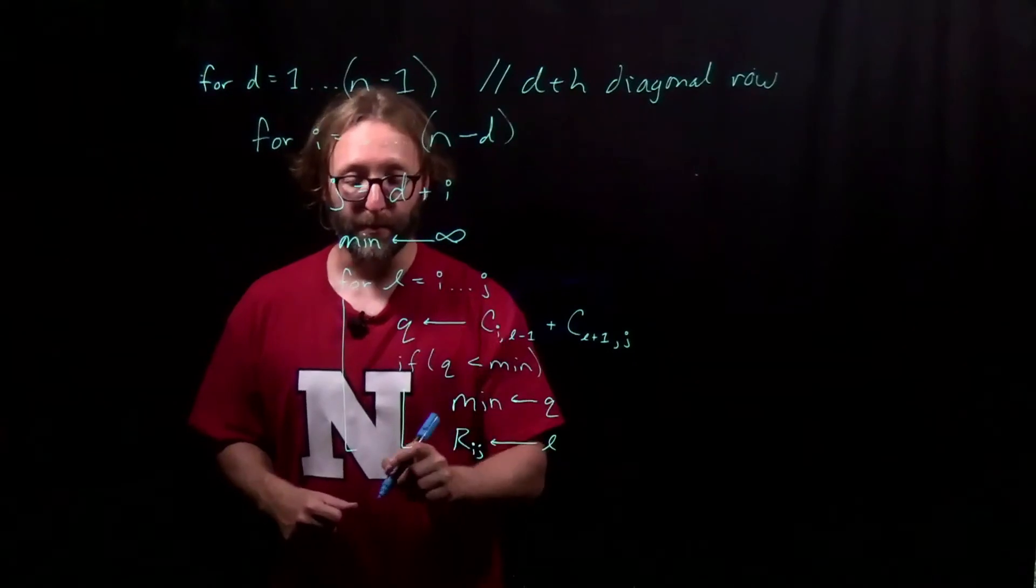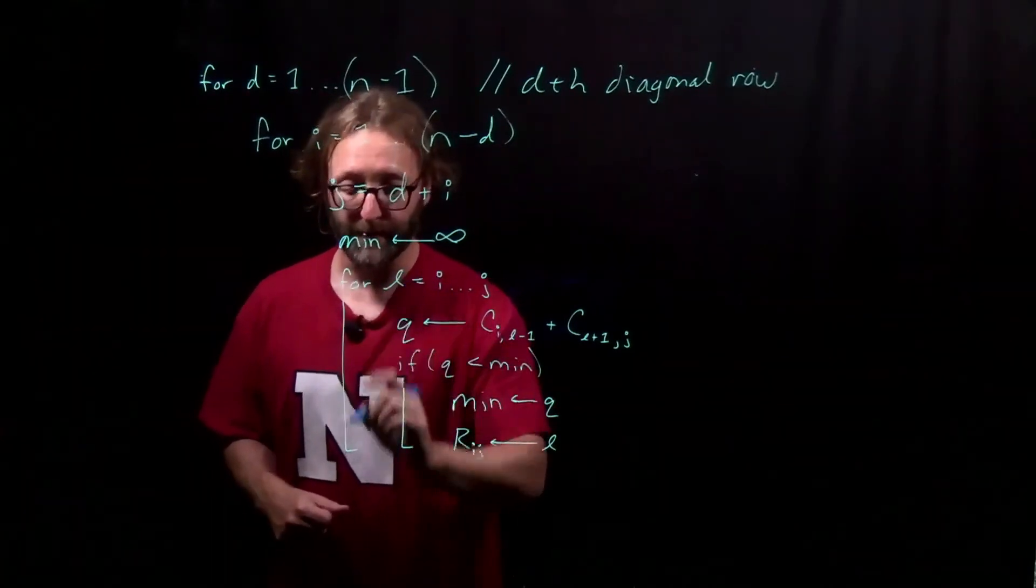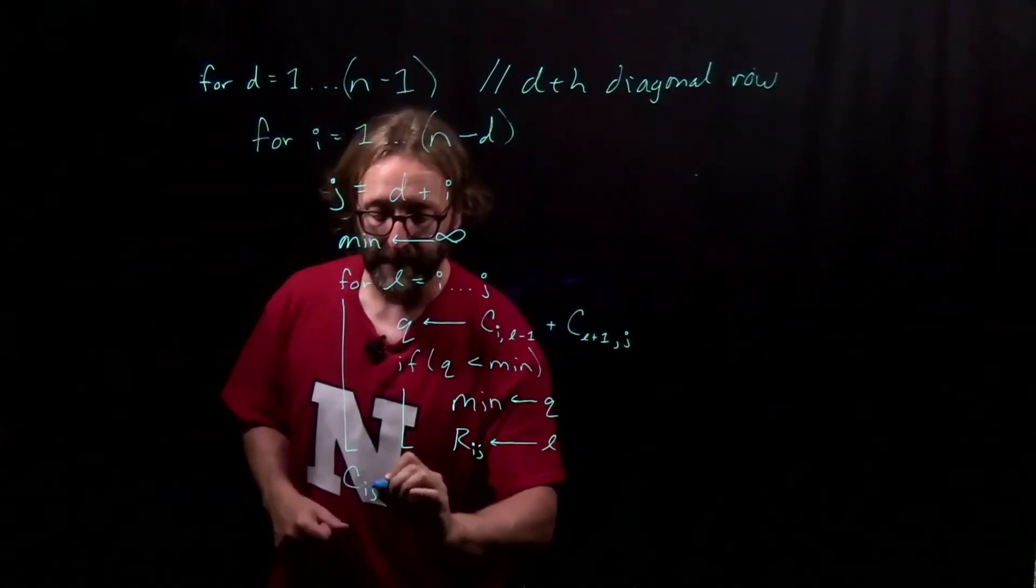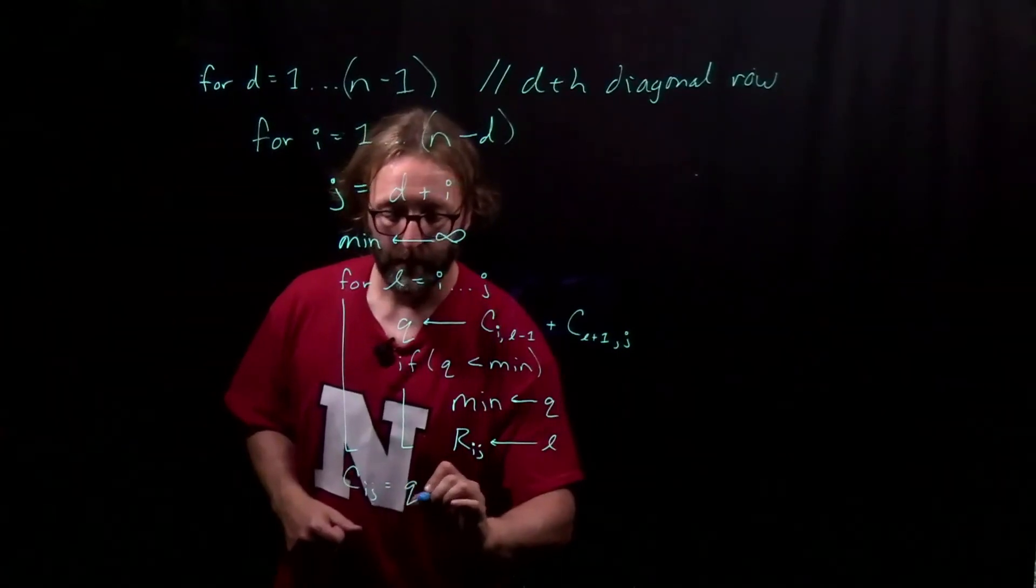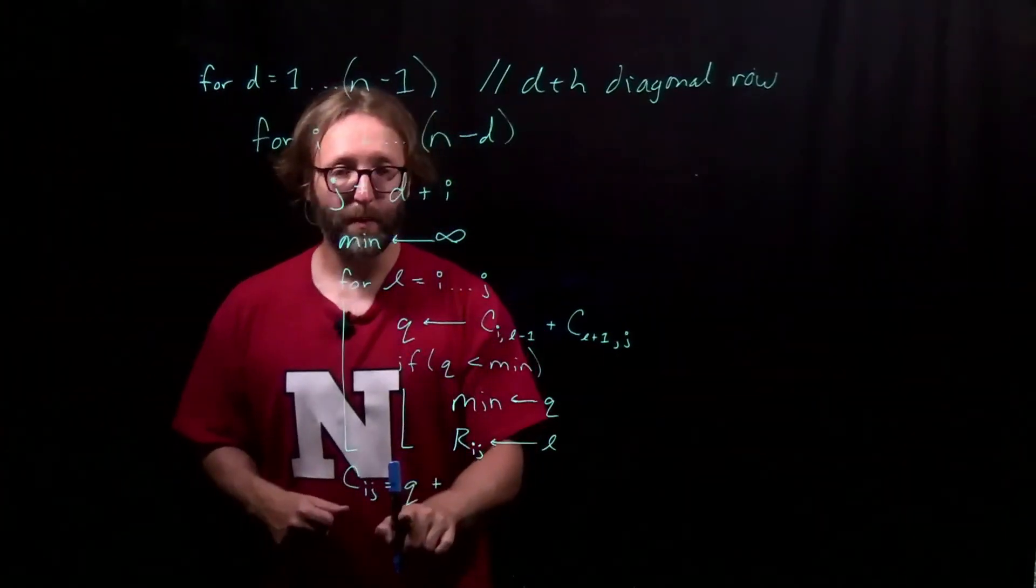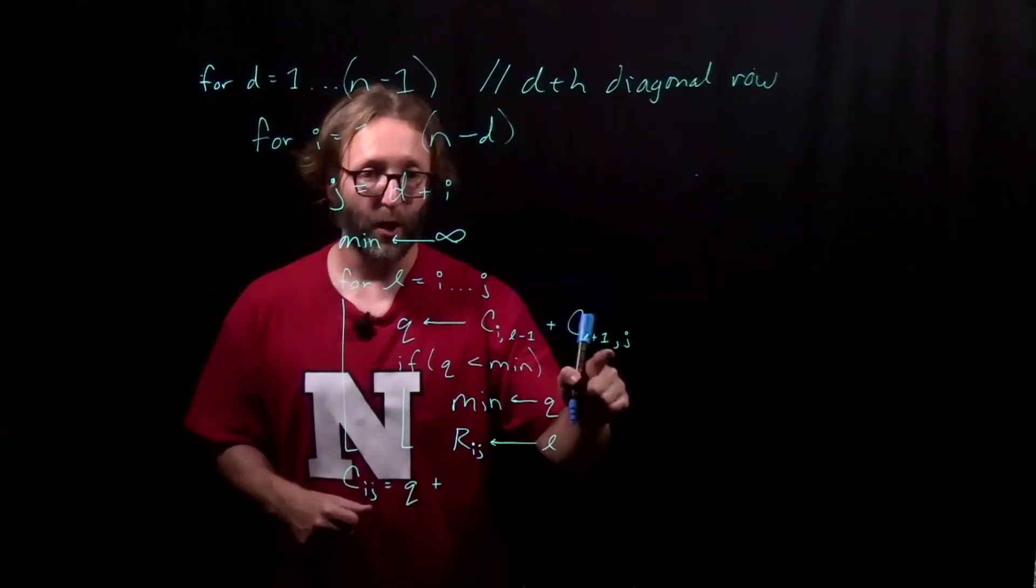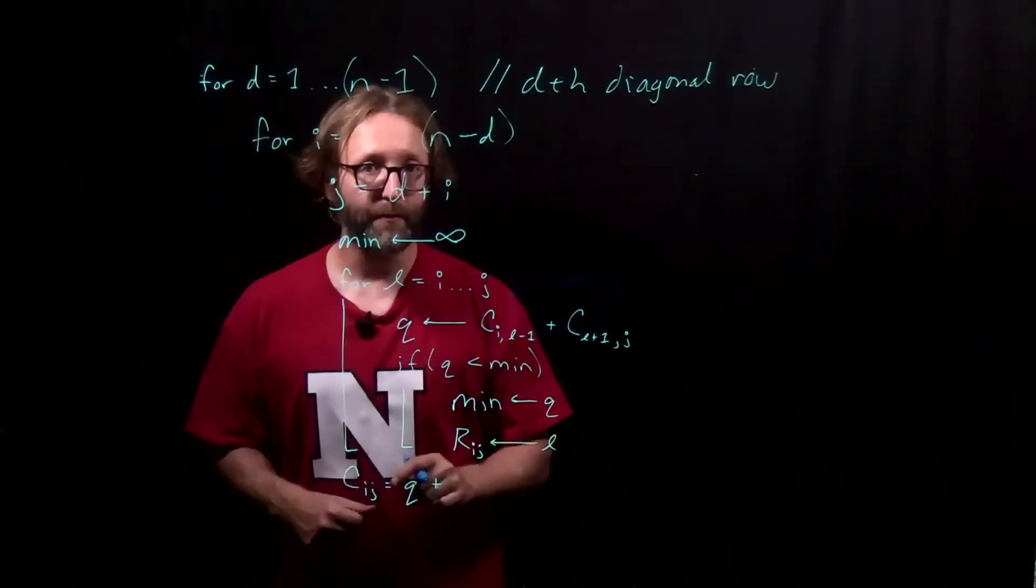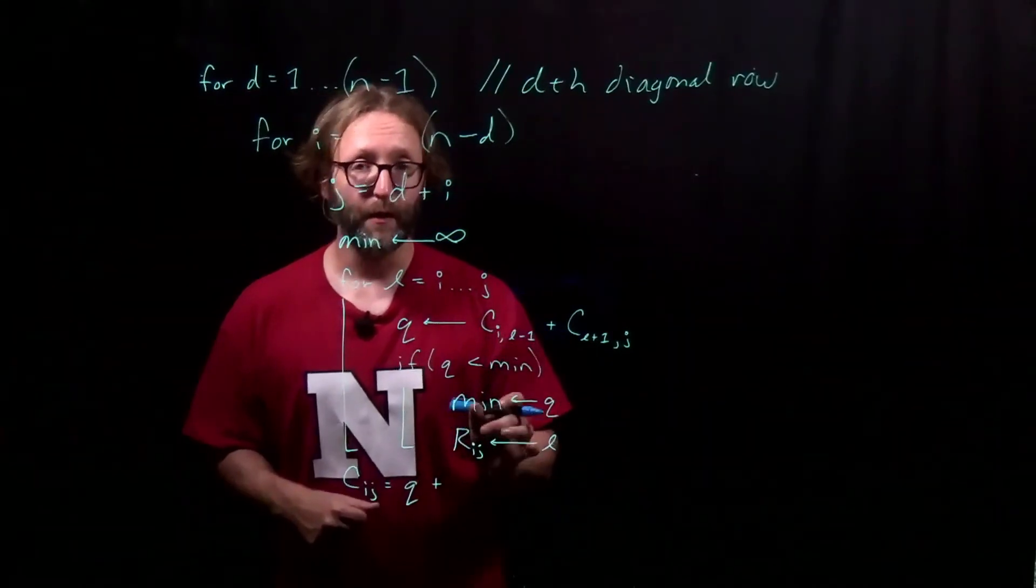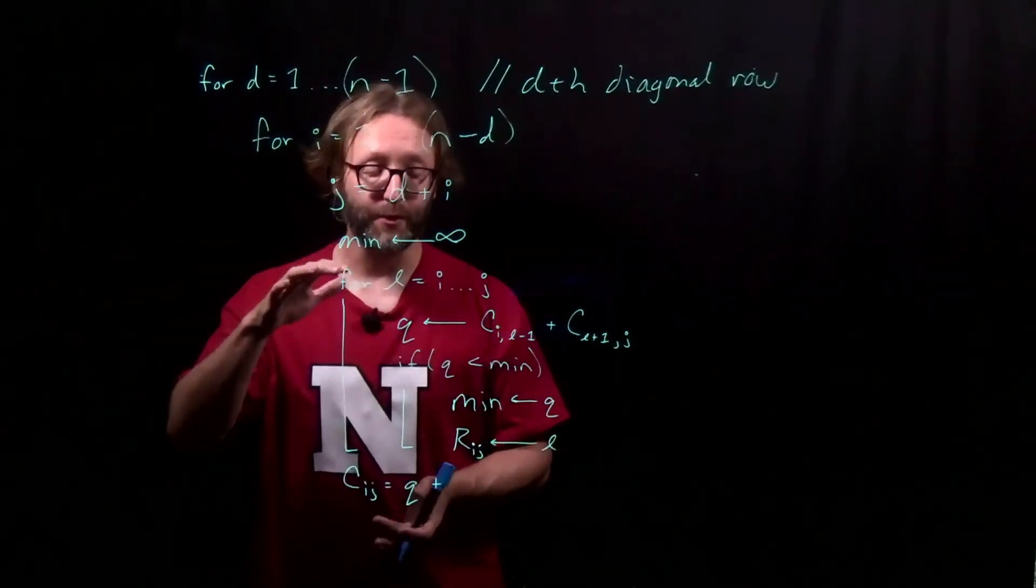At this point, we've found the minimum among all possibilities, so we can update our cost table. Remember that q is only capturing the cost of the left subtree and the right subtree. We still need to add 1 times the probability of each one of these things, because we're increasing the depth of the tree.